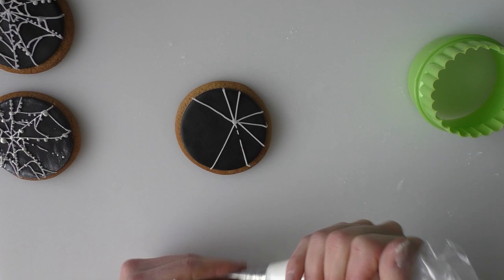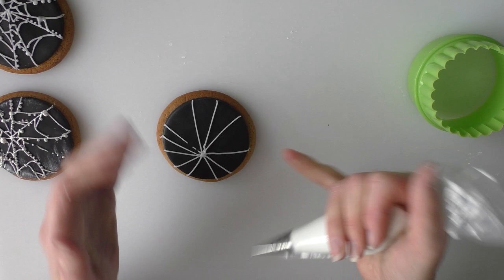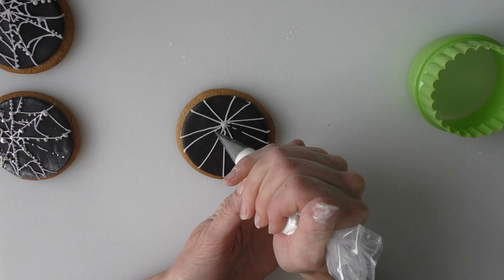So starting at the same point again, squeeze out another line. Just bring it to the edge of the black. You put some closer together, some further apart. If it breaks a little bit, don't worry too much because it adds to the effect on these cookies.